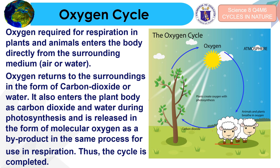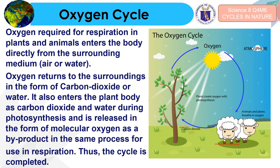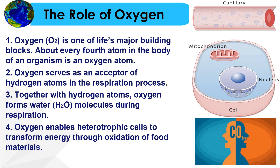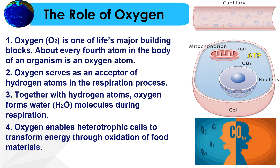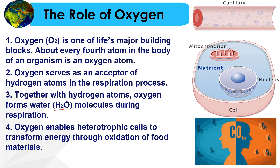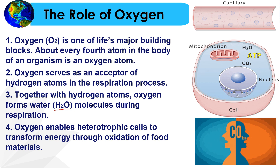Plants produce oxygen as a byproduct of photosynthesis, and as a byproduct of using oxygen, animals and humans release carbon dioxide, which is utilized by plants. Oxygen is one of life's major building blocks — about every fourth atom in an organism's body is an oxygen atom. Oxygen serves as an acceptor of hydrogen atoms in respiration, forming H₂O molecules, and also enables heterotrophic cells to transform energy through oxidation of food materials.